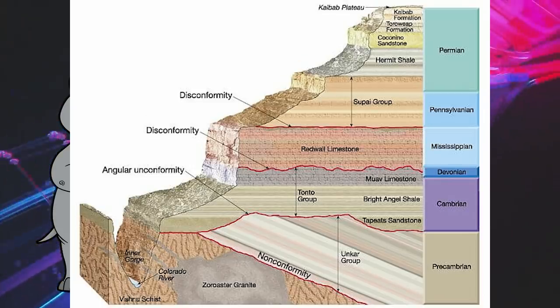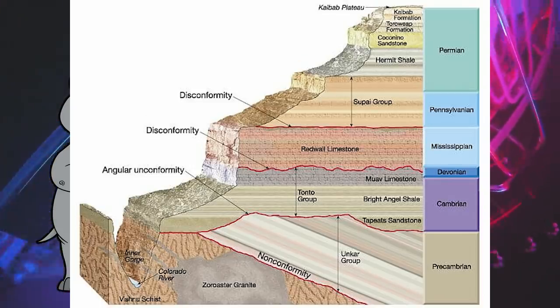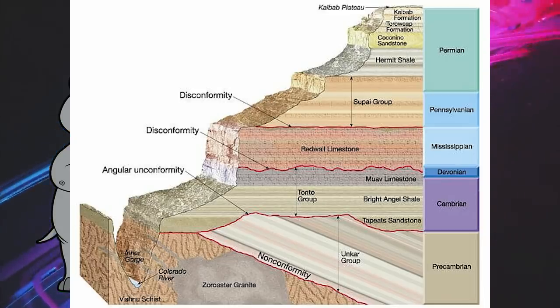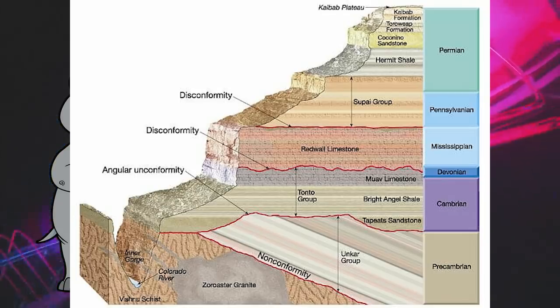So, how do we know that all these guys formed over long periods of time instead of in, say, one single year-long flood? Let's ignore everything below the Great Unconformity for now. We can figure out a rough timeline based on the environments that we see represented.